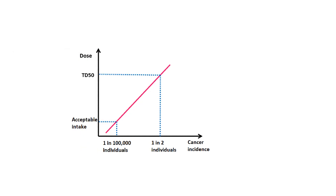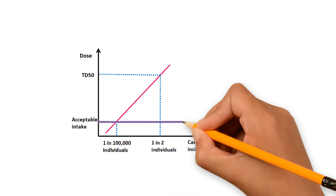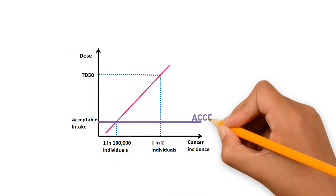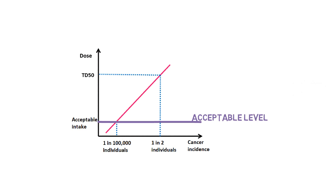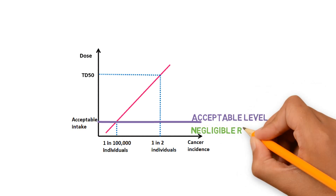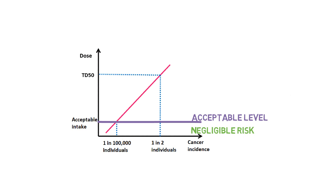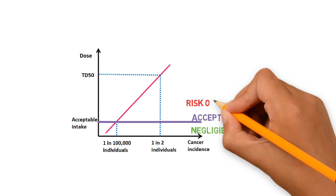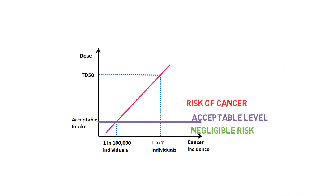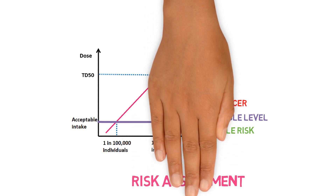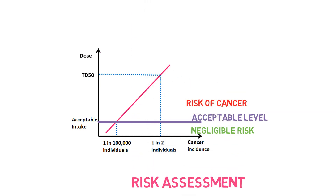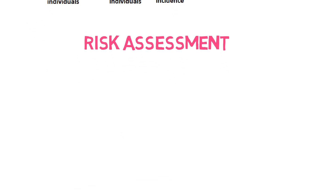However, this is only a problem above certain levels. So if the amounts are too low, below the level considered acceptable, the risk caused by the impurities is negligible, hence they are not of concern. This is why we do the risk assessment — to understand at which levels impurities are found and if those levels are above or below the safe limit.